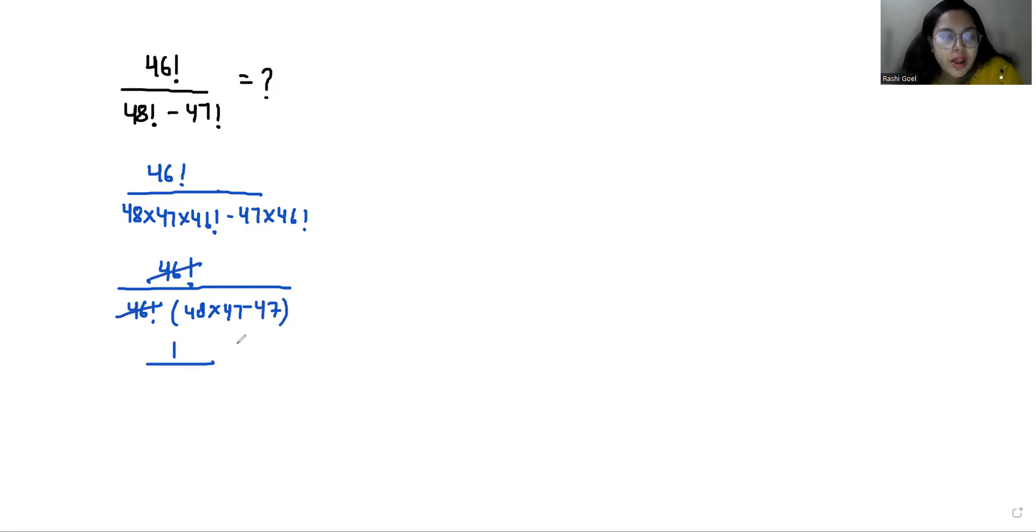So 1 by, if I take 47 as common, so 48 minus 1. So 1 by 47 times 47, that is 1 by 47 square.